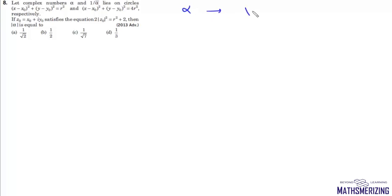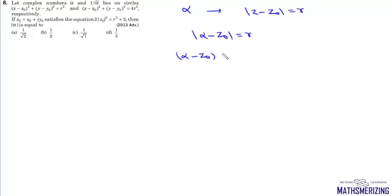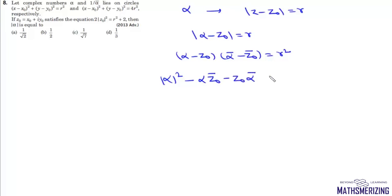We are given that alpha lies on the first circle, which we can write as mod of z minus z naught equals r. From here we can write mod of alpha minus z naught equals r. Squaring both sides: alpha minus z naught into alpha bar minus z naught bar equals r squared. Expanding, we get mod of alpha squared minus alpha z naught bar minus z naught alpha bar plus mod of z naught squared equals r squared. That's our first equation.